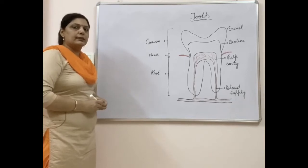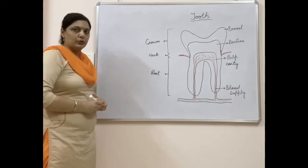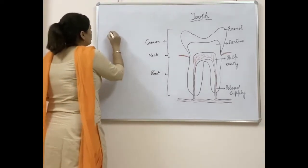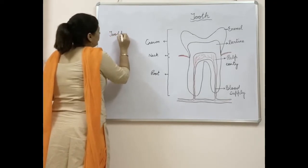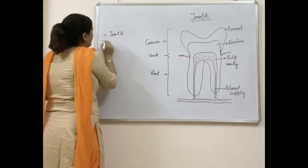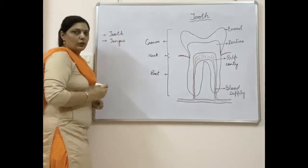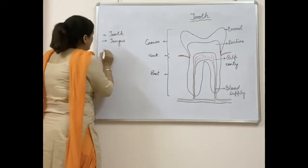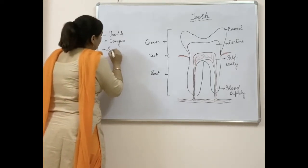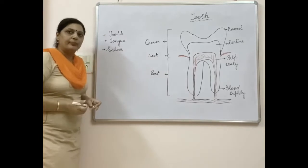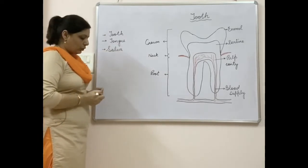The buccal cavity is the site where the process of digestion begins. The buccal cavity includes teeth for breakdown of food, the tongue responsible for mixing of food along with saliva, and saliva which is released by the salivary glands.